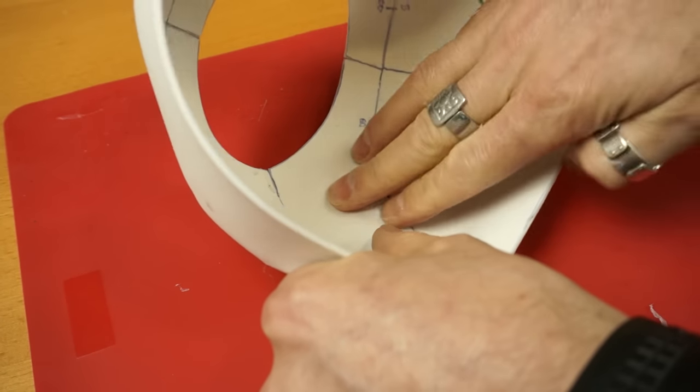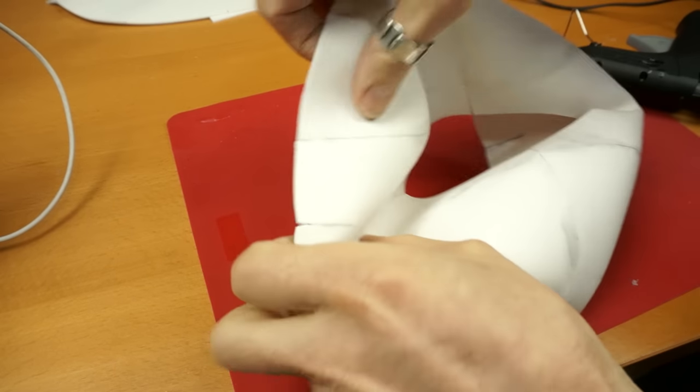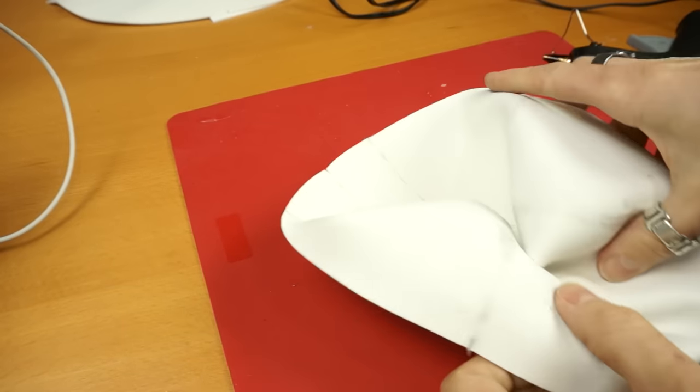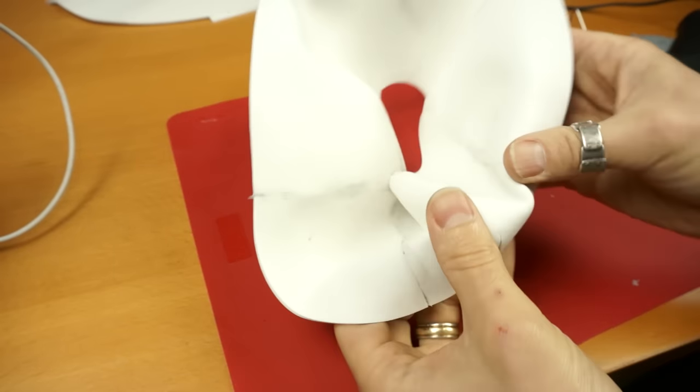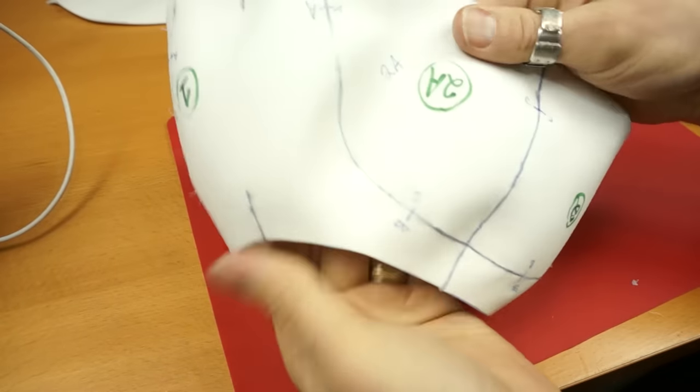I'm going to flip mine inside out here so you can see the numbers and markings a little bit better. However, if I were you, I would just keep it the other way because then the numbers are inside and when you paint over it, you're not painting over the numbers.